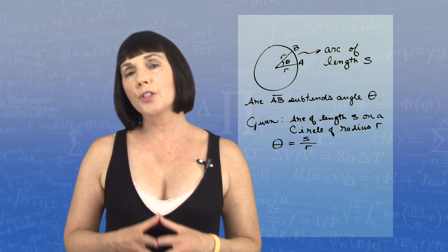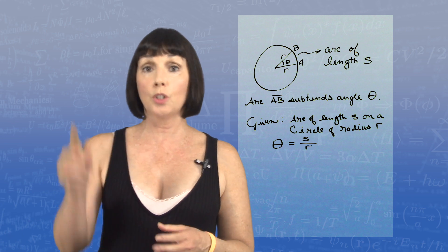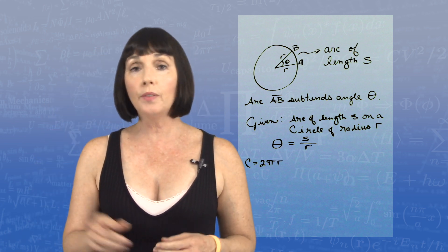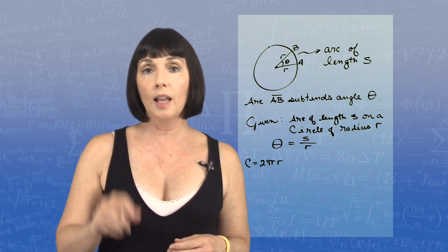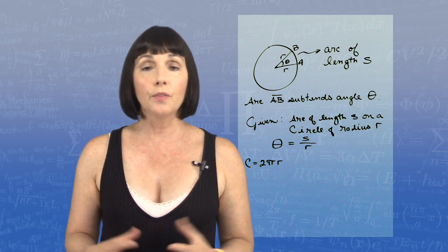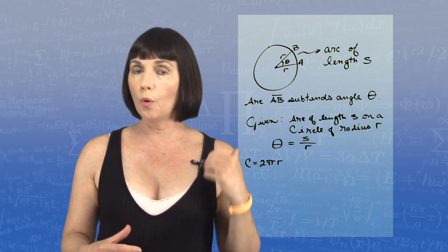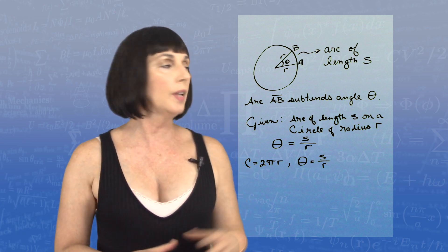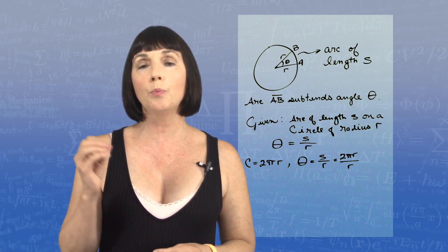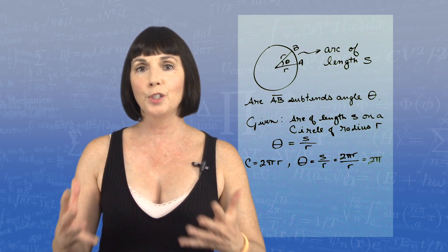Now remember that the circumference of a circle, the distance around the outside, is equal to 2 pi r. So if we traveled all the way around the outside, the arc would be the circumference. That would be the length of the arc that we traveled. So according to our formula, we would have theta equals s over r. In this case, that's equal to 2 pi r over r, or 2 pi.